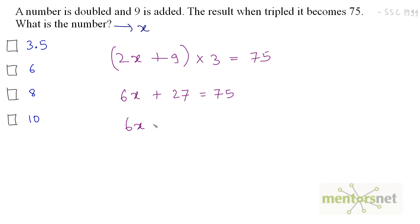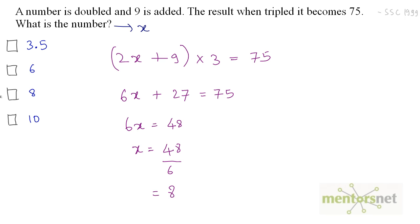6x equals 75 minus 27, which gives 48. So x = 48 divided by 6, and that is 8. 6 eights are 48. So the answer is option C.